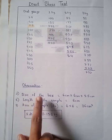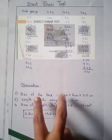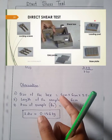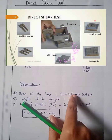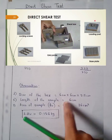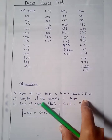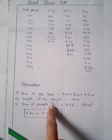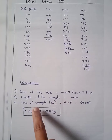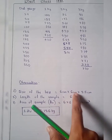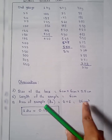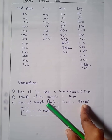The size of the box is 6 cm x 6 cm x 2.5 cm — length x breadth x depth. The length of the sample is 6 cm depth. The area of the sample is 6 cm x 6 cm = 36 cm squared.